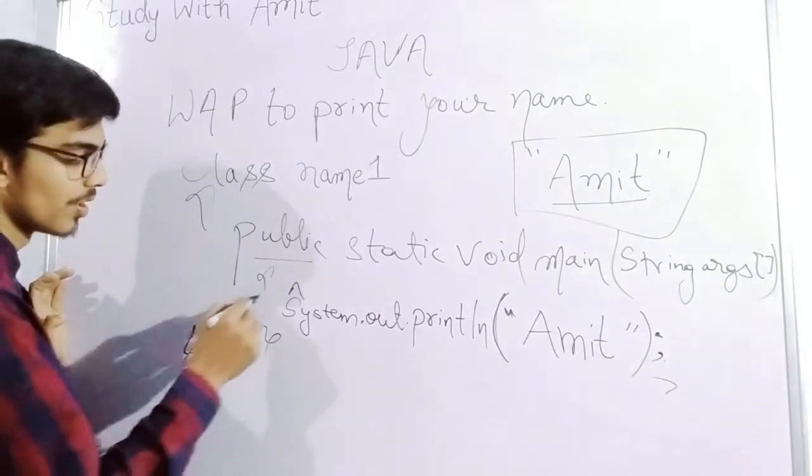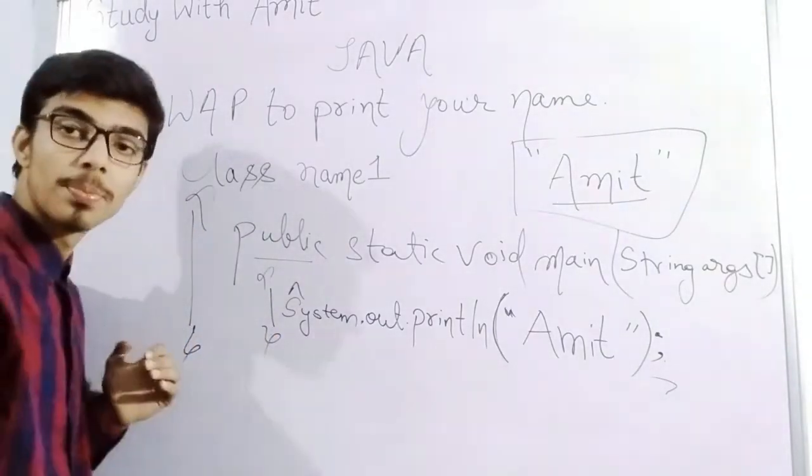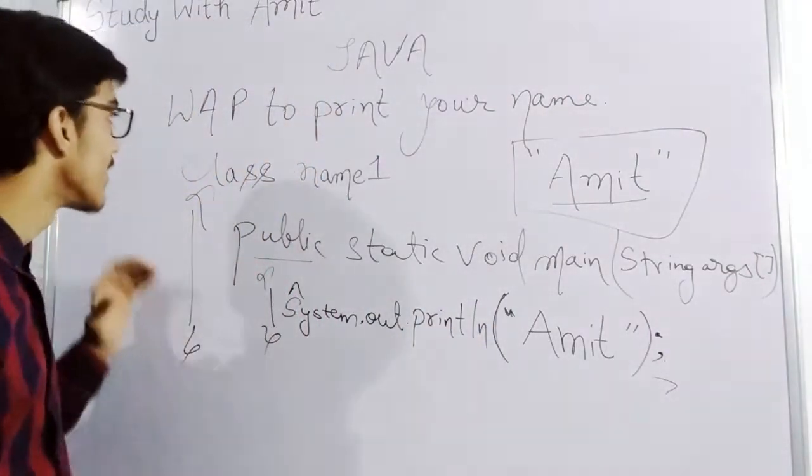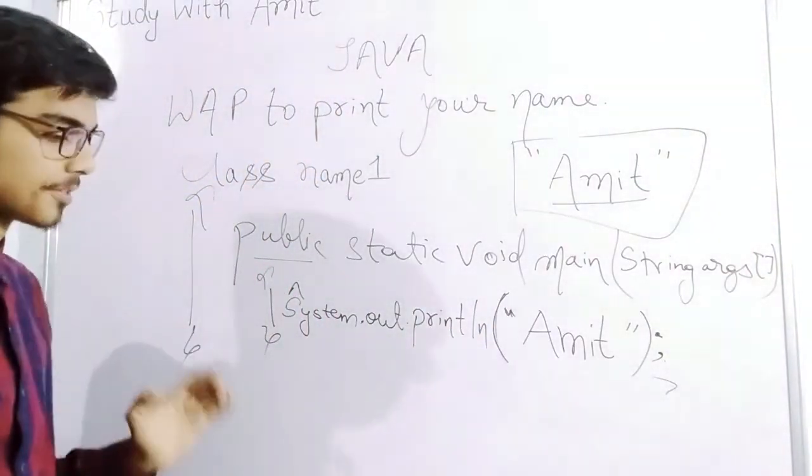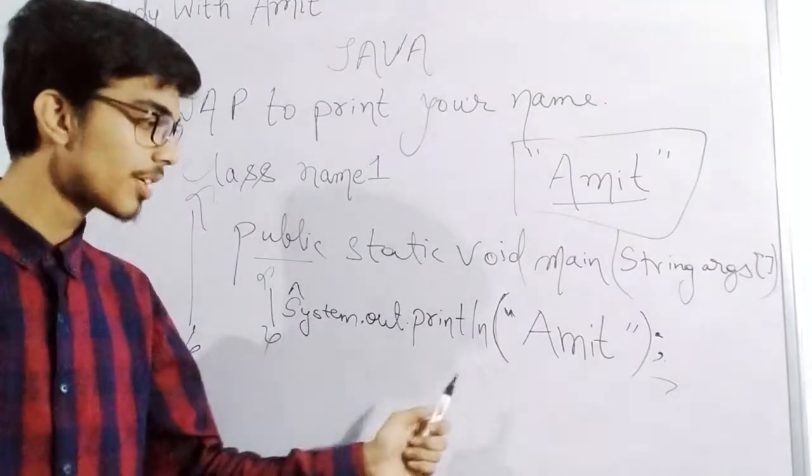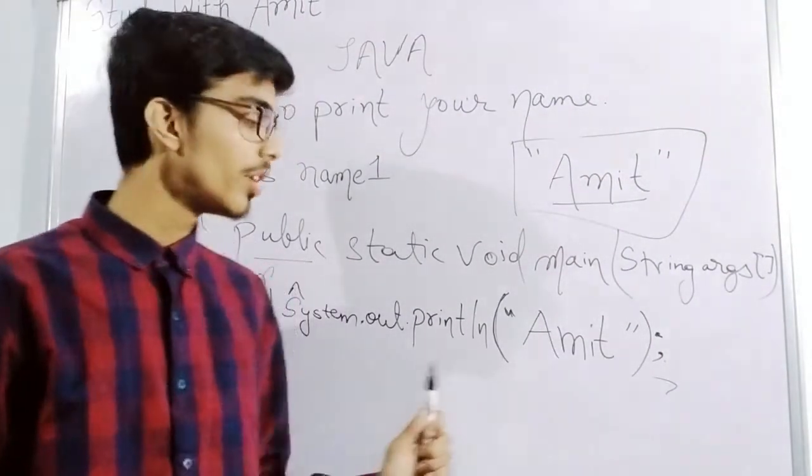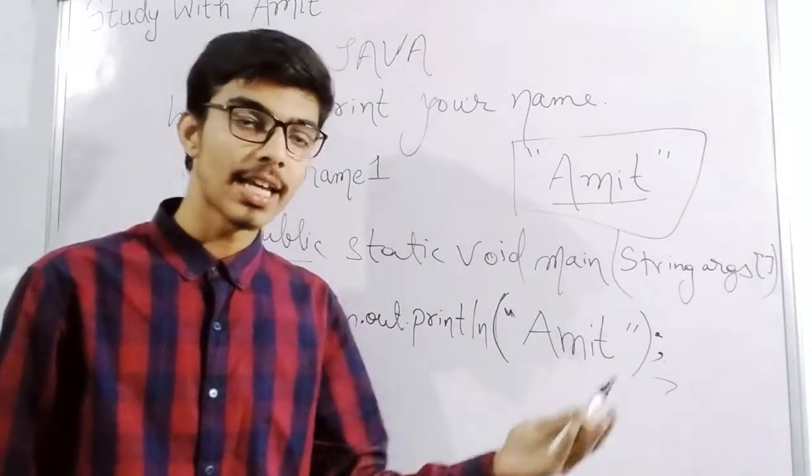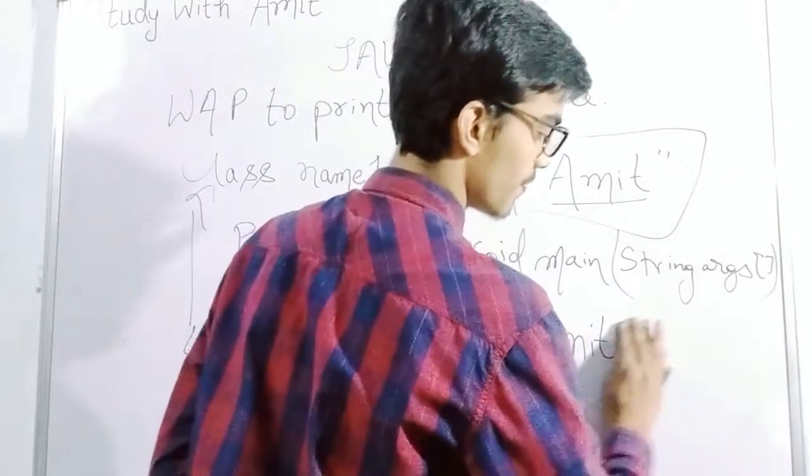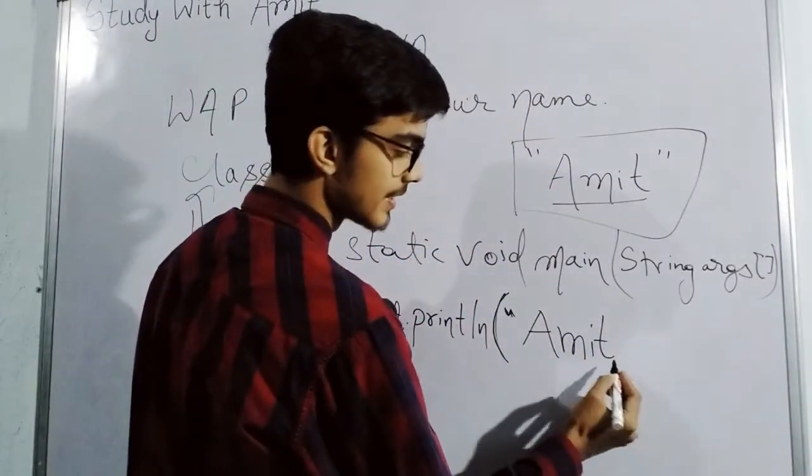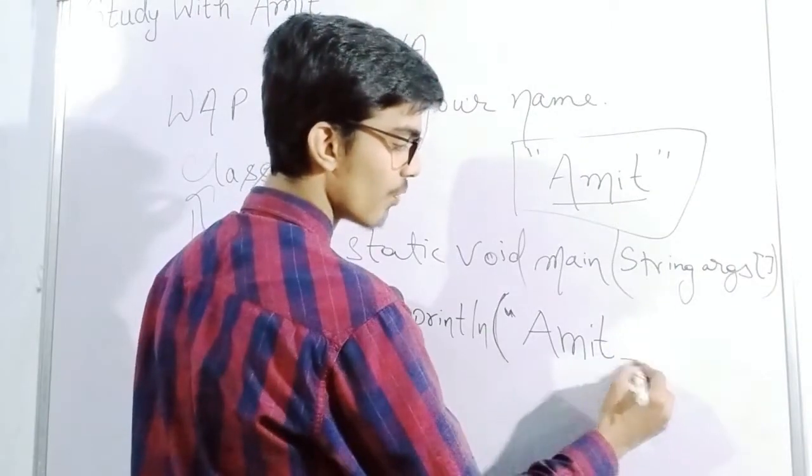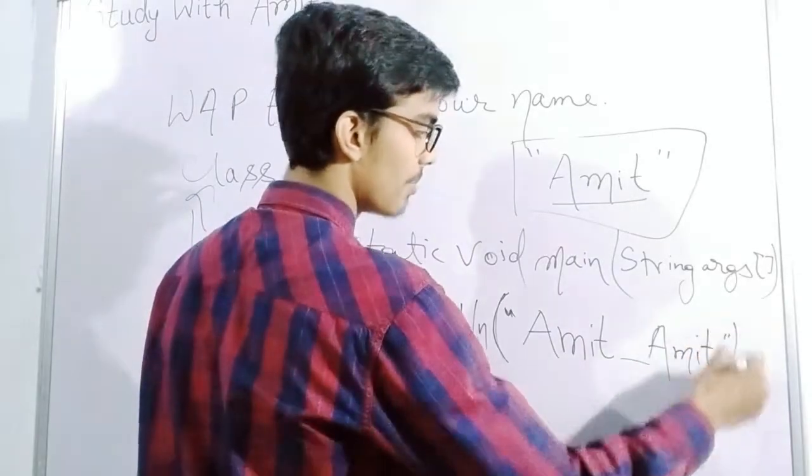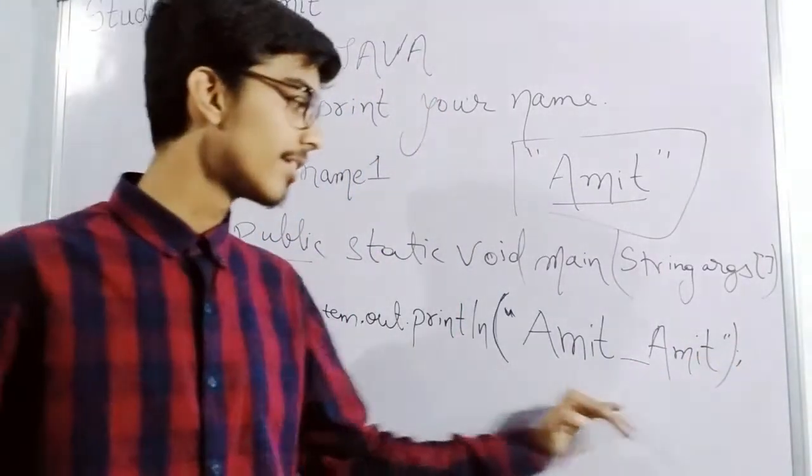After this we close the brackets. Number of brackets we open equals number of brackets we closed. Both should be equal, that's the thing. If I have to print Amit twice, what will we do? We'll just write it again, and this is the way it will print.